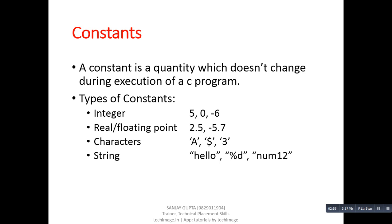In the series, first constant is integer. An integer constant can be a positive, negative or zero number. Second is real or floating point constants. It can be any positive or negative real value.